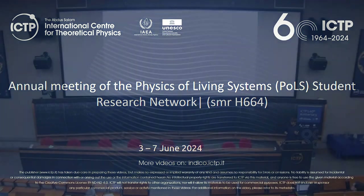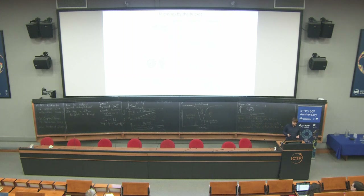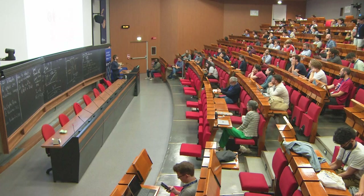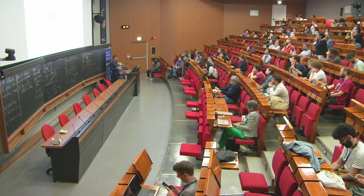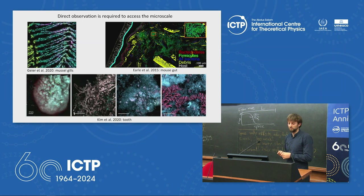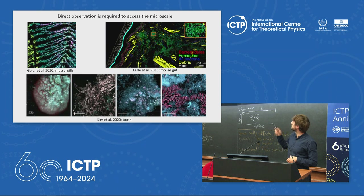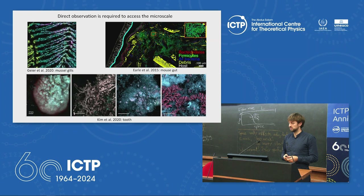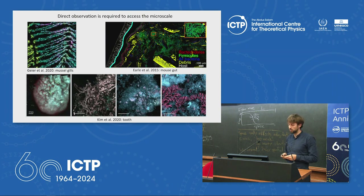Around the meter scale, when you want to start learning about ecological interactions or single-cell physiology at lower scales, approaches like sequencing become less powerful. To address those, one possibility is using direct observations with microscopy. Here you see some examples of samples taken ex vivo from muscle gills, the mouse gut, and the tooth, and you can see great variability between species and the importance that spatial dimensions have on the coexistence of these microbes.